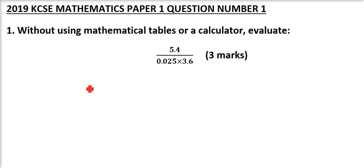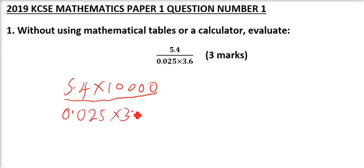So 5.4 we multiply by 10,000 to remove the decimal because in the denominator we have 4 decimal places and the numerator we have 1 decimal place. So it is 0.025 multiplied by 3.6 and you multiply by 10,000. That way you have removed the decimals and that will make them whole numbers easier to simplify.